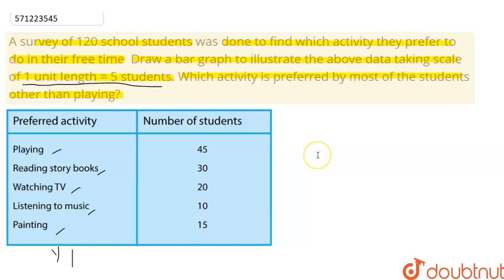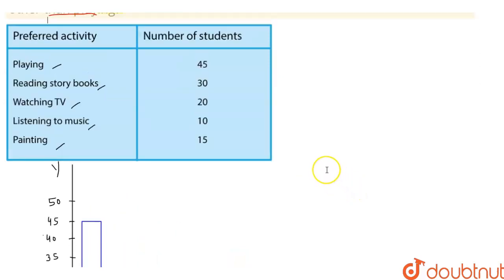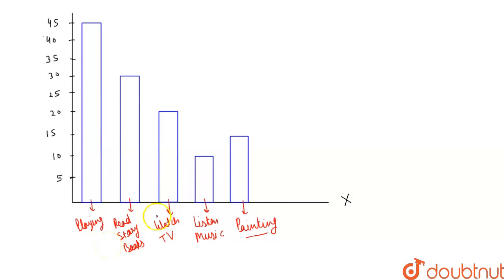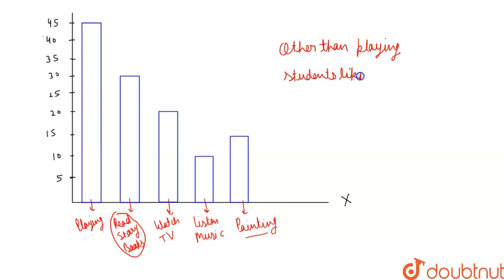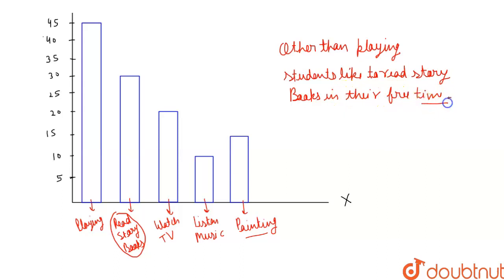Now, we are also asked which activity is preferred by most students other than playing. From this bar graph, we can see that other than playing, the most liked activity is reading storybooks. So, students like to read storybooks the most in their free time. This is our solution. Thank you.